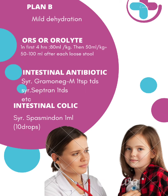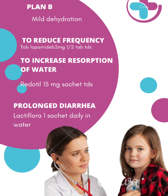For intestinal antibiotic, we give syrup Grammonic — Septran — 1 TDS. For intestinal colic, we give Spasement drops, 1ml TDS. To reduce the frequency of loose stools, we give tablet Loperamide 2mg, half tablet. To increase reabsorption of water, we give Racecadotril (Red Rutil) 15mg TDS. For prolonged diarrhea, we add Lactifluoride one sachet daily in water after meals.